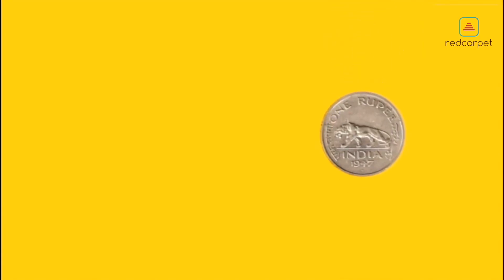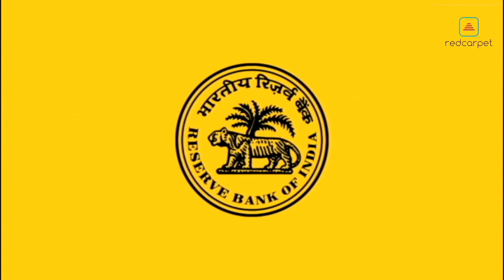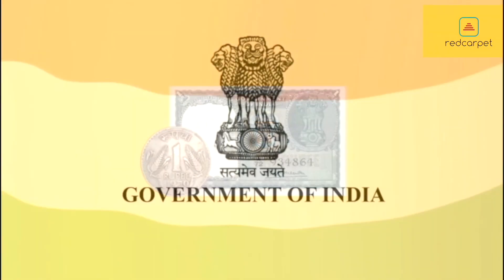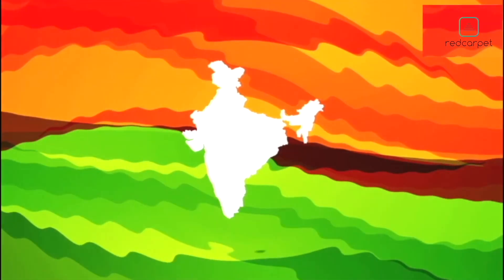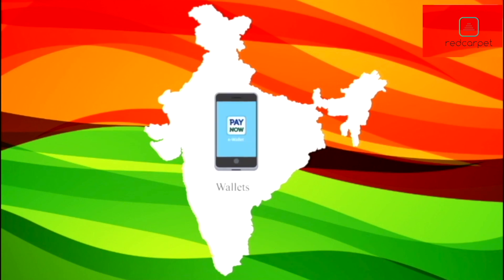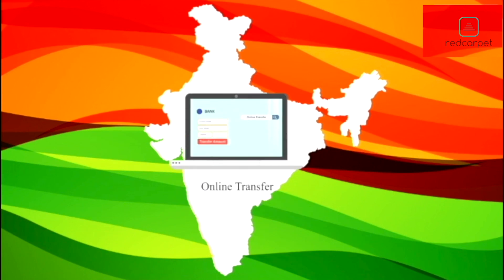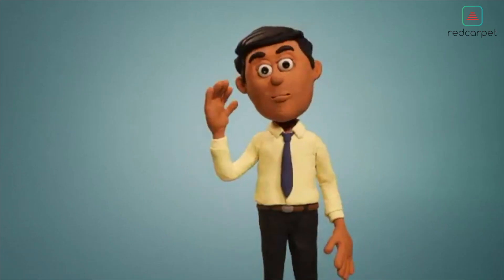After the independence of India in 1947 and the accession of the princely states to the new union, the Indian rupee replaced all the currencies of previously autonomous states. The Reserve Bank of India then issued notes and coins on behalf of the Government of India. India has since progressed greatly and now has many digital payment options like credit cards, wallets, and online transfers — moving from a cash to a cashless society.